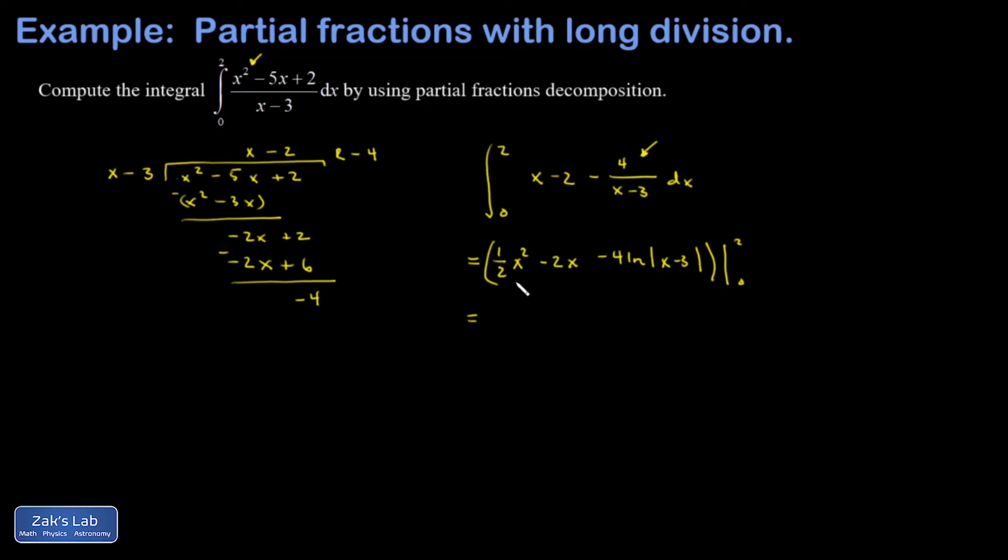When I plug in my upper limit, out of the 1 half x squared, I'm going to get a 2. Out of the negative 2x, I'm going to get a negative 4. And then I have a minus 4 natural log absolute value of 2 minus 3. That's negative 1 in there, but the absolute value gives me a 1, and the natural log of 1 is 0.